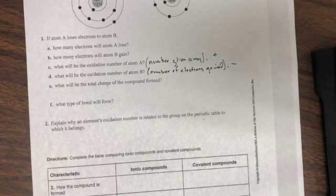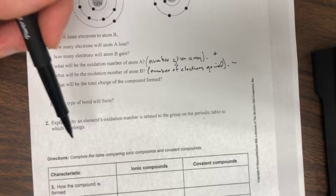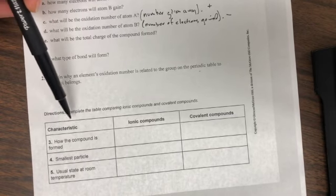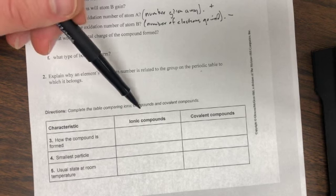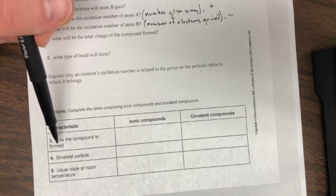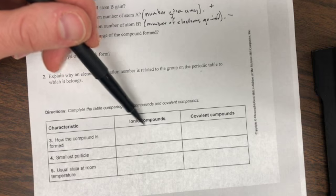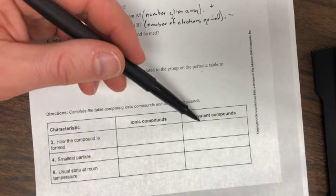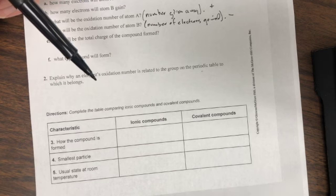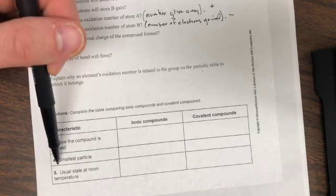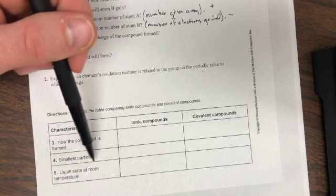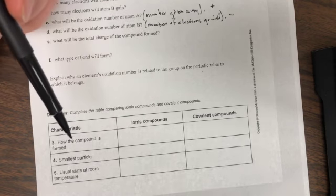Finally, down here at the bottom, complete the table comparing ionic compounds and covalent compounds. How are ionic compounds formed? You'll notice that in the notes. How are covalent compounds formed? You'll see that in the notes. What do you call the smallest particle of an ionic compound, and what do you call the smallest particle of a covalent compound?